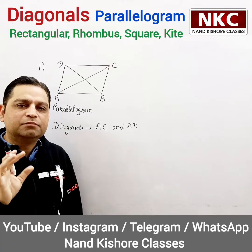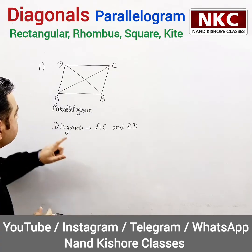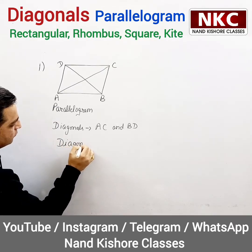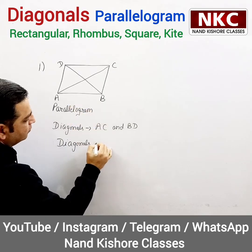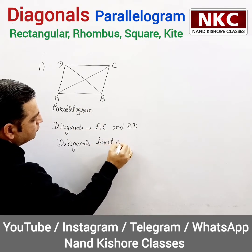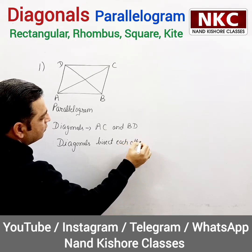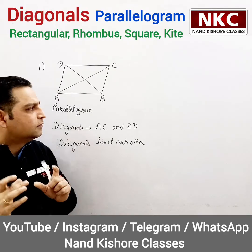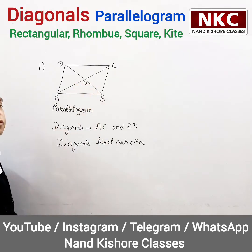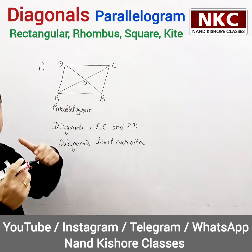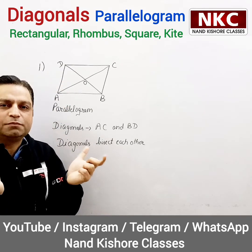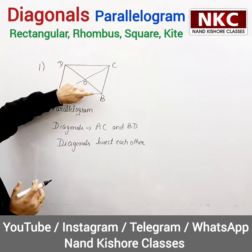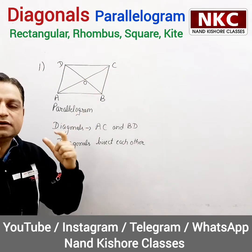Remember one very important result for parallelogram: diagonals of a parallelogram bisect each other. When we say diagonals bisect each other, let us suppose they are intersecting at point O. The word bisecting means splitting into two equal parts. That means AC is bisecting BD and BD is bisecting AC — both are bisecting each other.